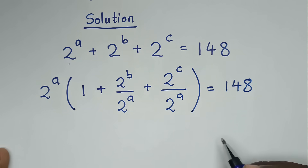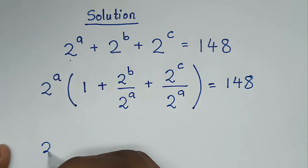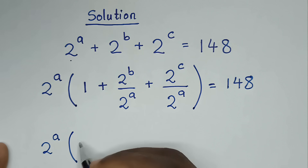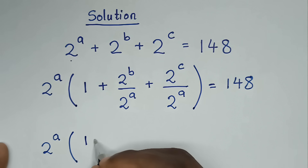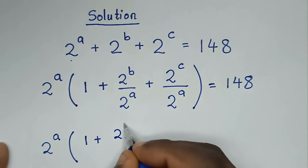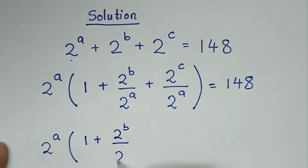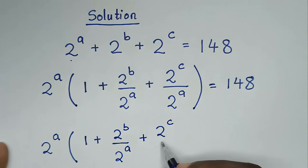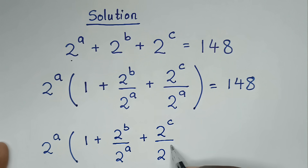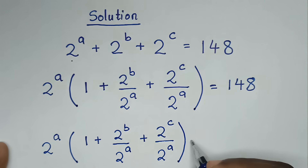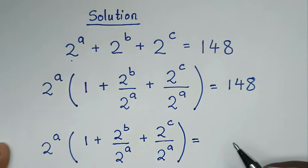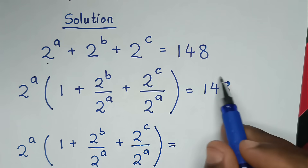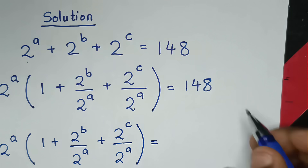Then in the next step, it will be 2 power of A, bracket: 1 plus 2 power of B over 2 power of A plus 2 power of C over 2 power of A, bracket — is equal to. Into here, we find the prime factors of 148.